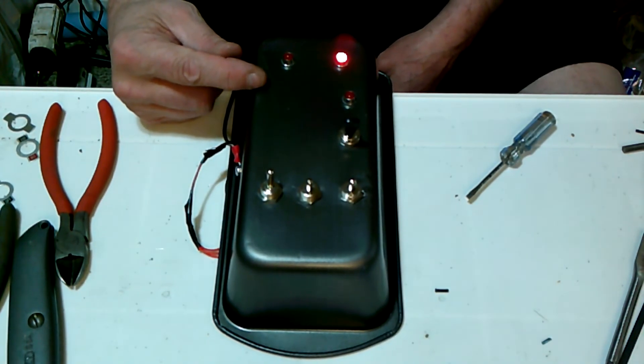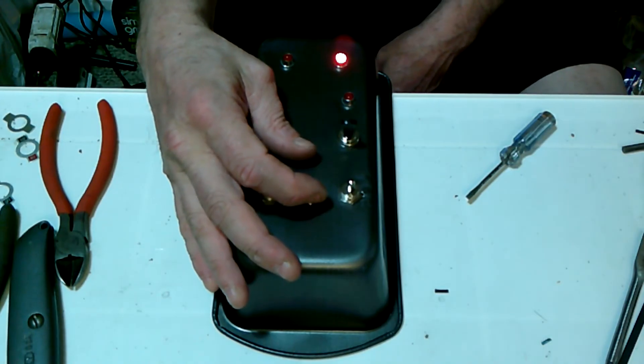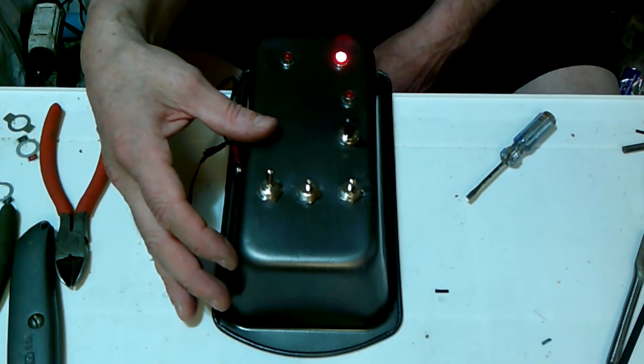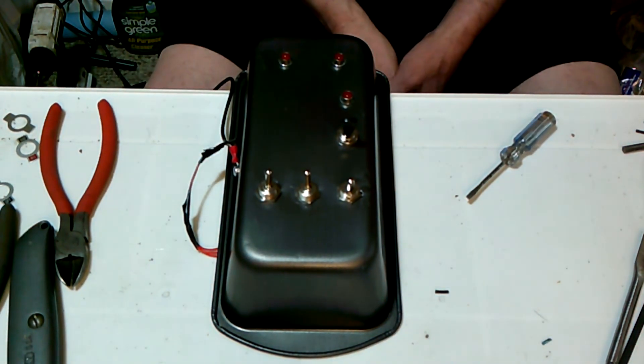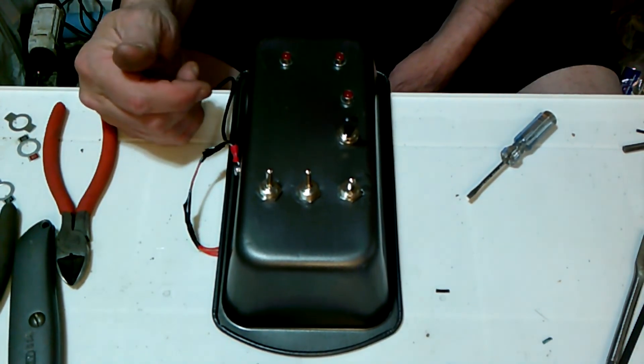And then we turn off the solenoid B switch. When both solenoids are off, we are in third gear. Again, we're turning it off, but it feels like we're turning it on, shifting into third gear.